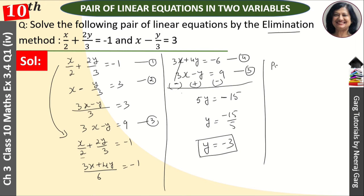Putting in equation 3, this was our 3x minus y is equal to 9. So 3x minus minus 3 is equal to 9. Then 3x plus 3 is equal to 9, then 3x is equal to 9 minus 3, or 3x is equal to 6. So x is equal to 2. This is our answer.